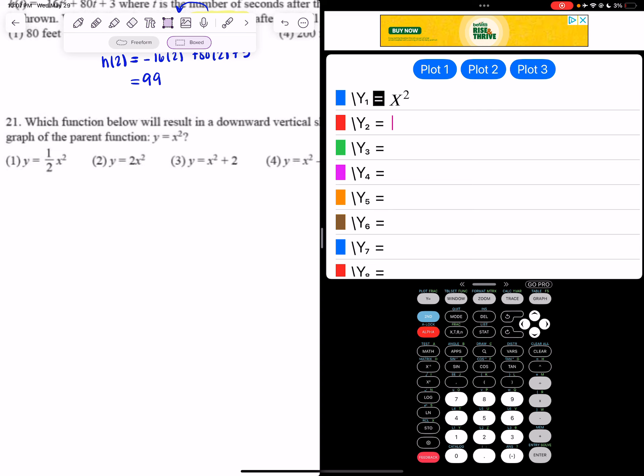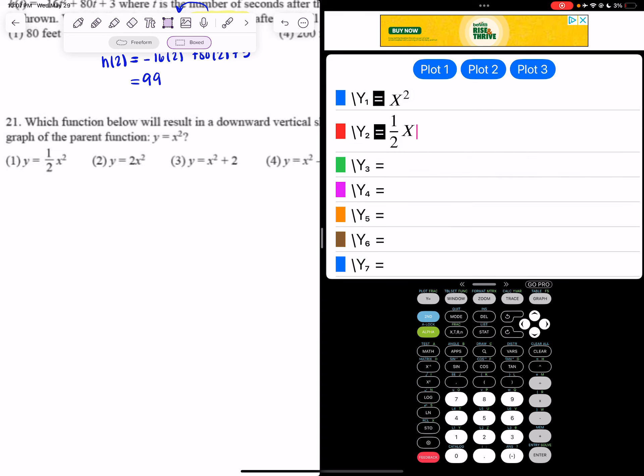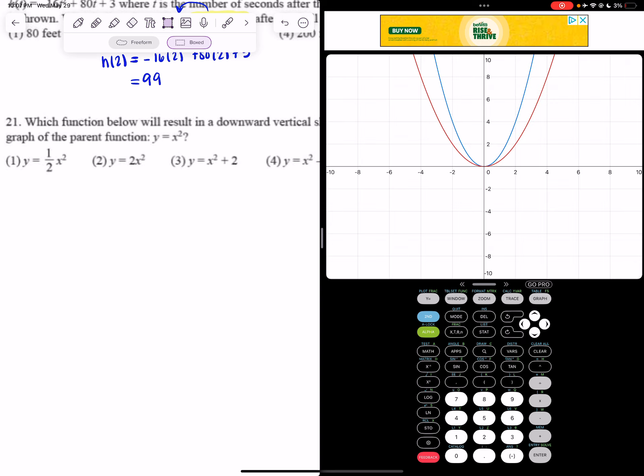So if I look at choice 1, that's one half x squared, and then I'm going to hit graph. If you notice, it's not being shifted down. It's just getting wider, so it can't be choice 1.